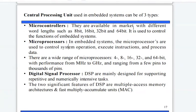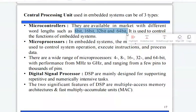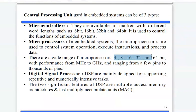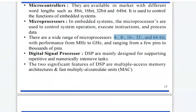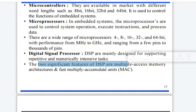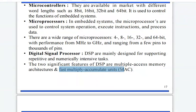Microcontrollers are available in the market with different word lengths such as 8-bit, 16-bit, 32-bit, and 64-bit. Microprocessors are also available with different word lengths like 4-bit, 8-bit, 16-bit, 32-bit, or 64-bit. DSPs have two significant features: multiple access memory architectures and fast multiply-accumulate units, in short called MAC.